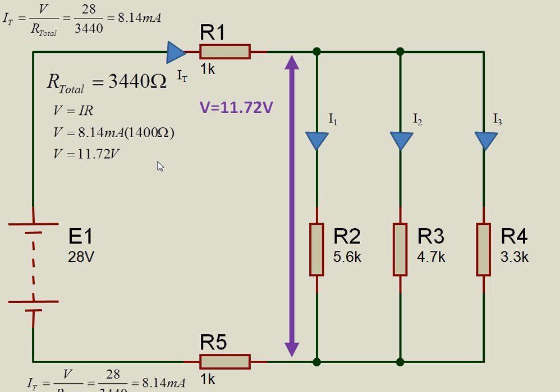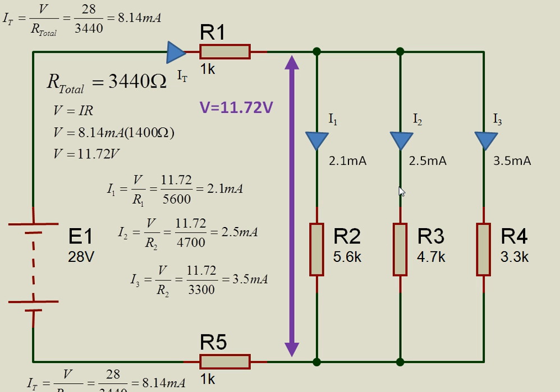And then I can calculate I1, I2, and I3. So I1 is the voltage across R2, which is 11.72 volts divided by 5,600, and that will give me 2.1 milliamps. Similarly, I2 is the voltage across this resistor, which is also 11.72 because they're in parallel, divided by 4,700. That gives me 2.5 milliamps. And similarly for I3, which gives me 3.5 milliamps.